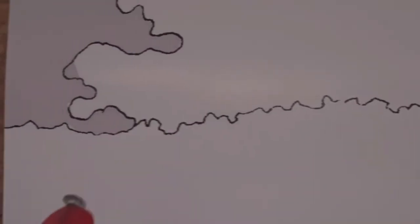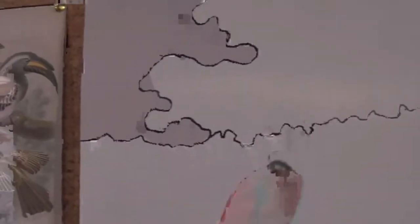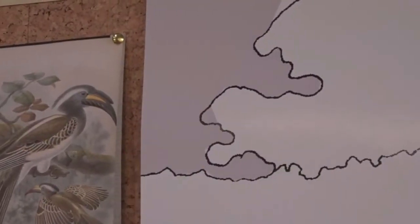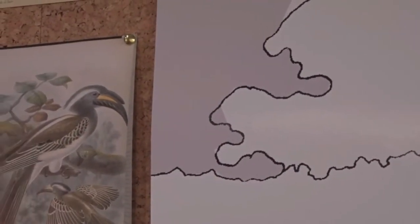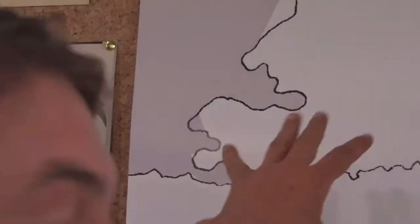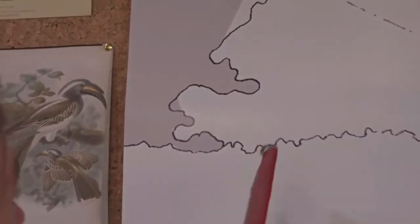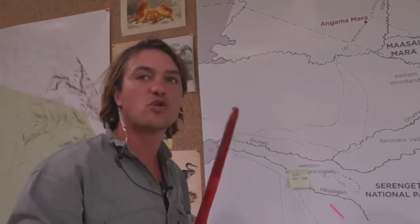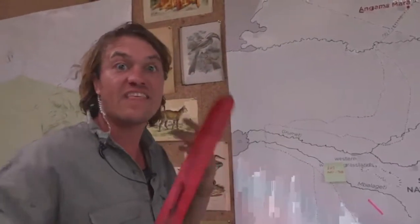Just before it gets to Lake Victoria, it goes into a massive swamp for about 50 to 60 kilometers — a very important birding area with lots of very interesting birds. It is one of the five major tributaries that flows into Lake Victoria, which in the end becomes part of the Nile.